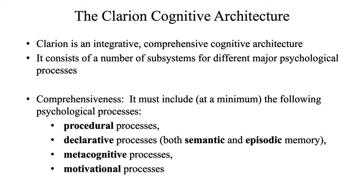Clarion is an integrative, comprehensive cognitive architecture consisting of a number of subsystems for different major psychological processes. A quick survey of the psychology and cognitive science literature shows that a comprehensive model must, at a minimum, include the following psychological processes: procedural processes for dealing with actions and skills; declarative processes for general knowledge and reasoning; metacognitive processes for monitoring and regulating other cognitive processes; and motivational processes, which provide impetus for action and cognition.